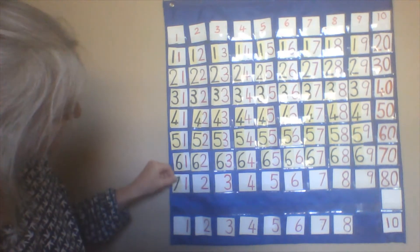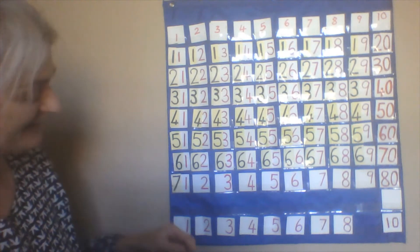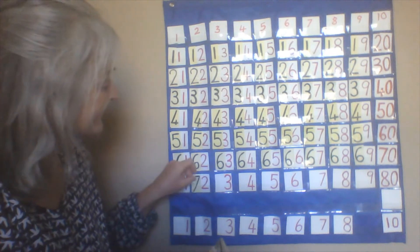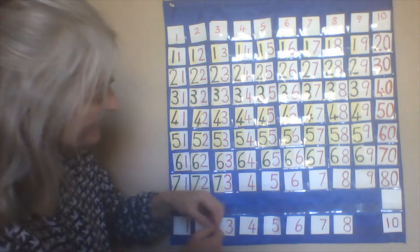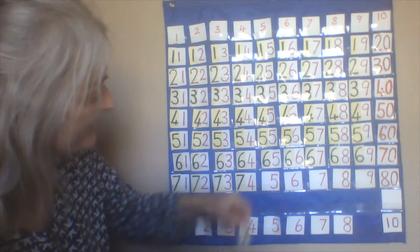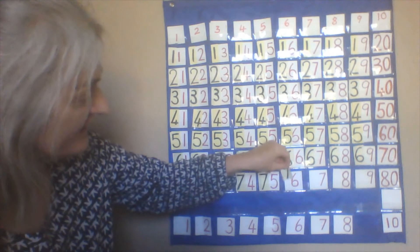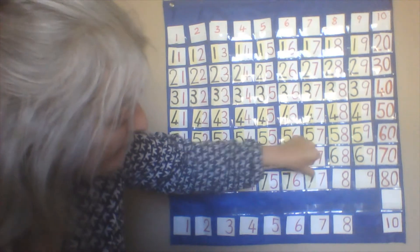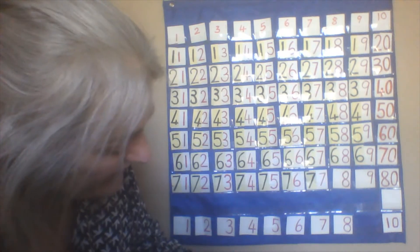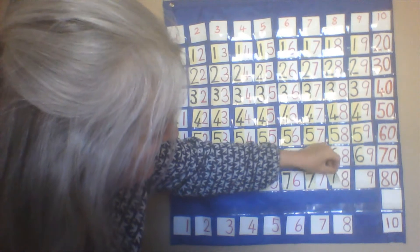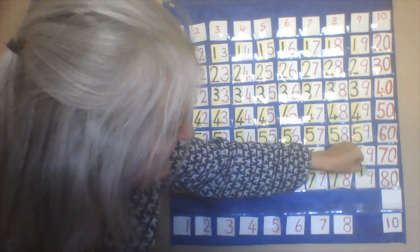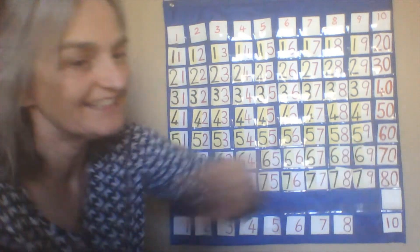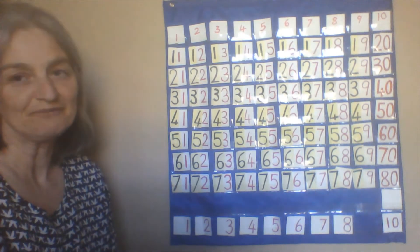Told you that was going to be 71. 71 — you knew that, didn't you? 72, 73, 74, 75, 76, 77, 78, 79. And what comes after 7? 80. Because 8 comes after 7, so we call it 80.